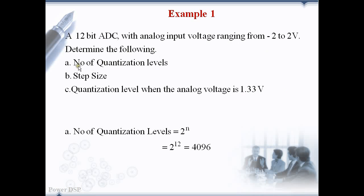First we have to find the number of quantization levels. A bit depth of n gives 2 to the power n quantization levels. n is 12, so there are 2 to the power 12, that is 4096 quantization levels.